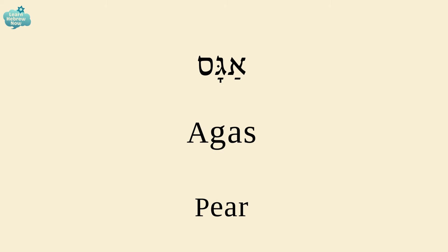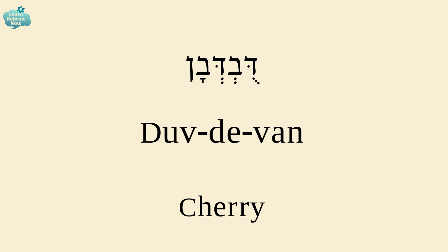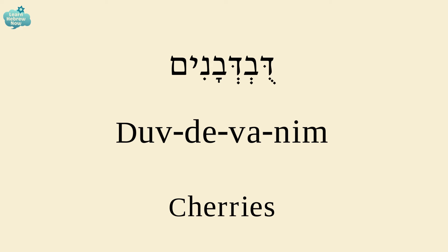A pear is AGAS. And the plural for pears is AGASIM. A cherry is DUVDEVAN. And cherries are DUVDEVANIM.